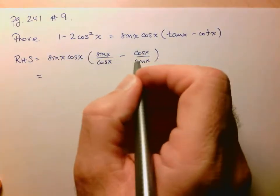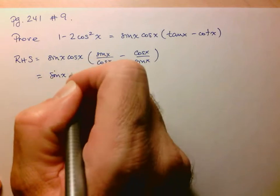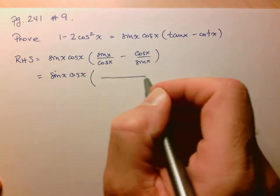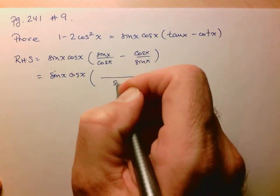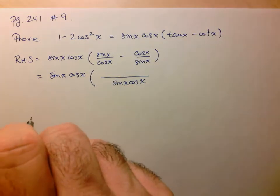And so here I'm going to subtract these using a common denominator. So again, sine x cos x. And here, common denominator is going to be sine x cos x, which is very good because it's going to reduce with that one there.